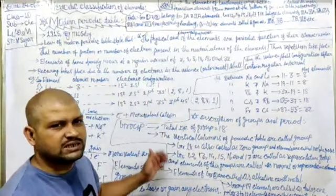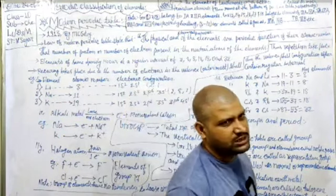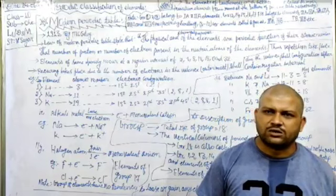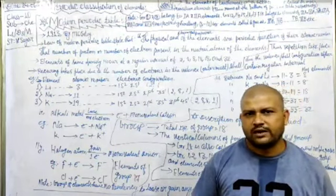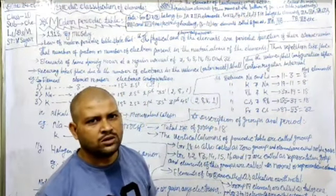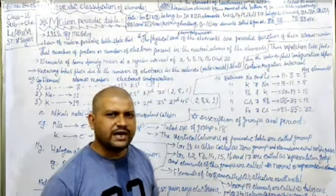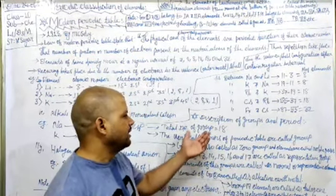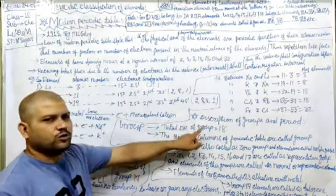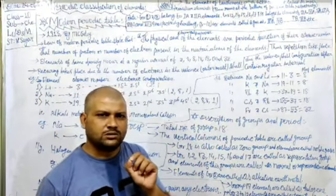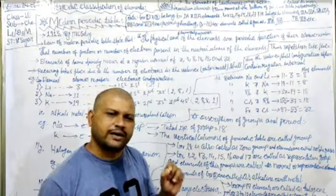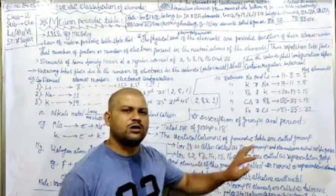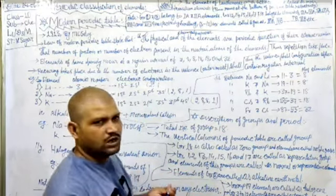Now let us move towards the descriptions of groups and periods in the modern periodic table. Same as in Mendeleev's table, there are rows and columns. Each vertical column is called a group, and each row is called a period. The total number of groups in the modern periodic table is 18. The vertical columns of the periodic table are called groups.